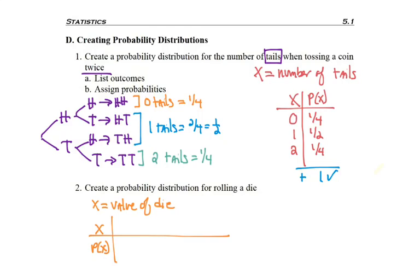If I'm listing everything that can happen, I'm going to get a one a sixth of the time, a two a sixth of the time, etc., up to a six a sixth of the time. Now notice it didn't start with zero, because there is no side that's zero. But again, this one does total one.